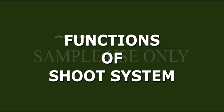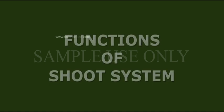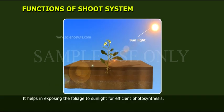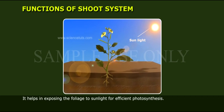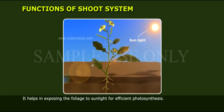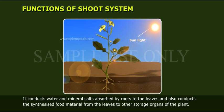Functions of the shoot system: It helps in exposing the foliage to sunlight for efficient photosynthesis. It conducts water and mineral salts absorbed by roots to the leaves, and also conducts the synthesized food material from the leaves to other storage organs of the plant.